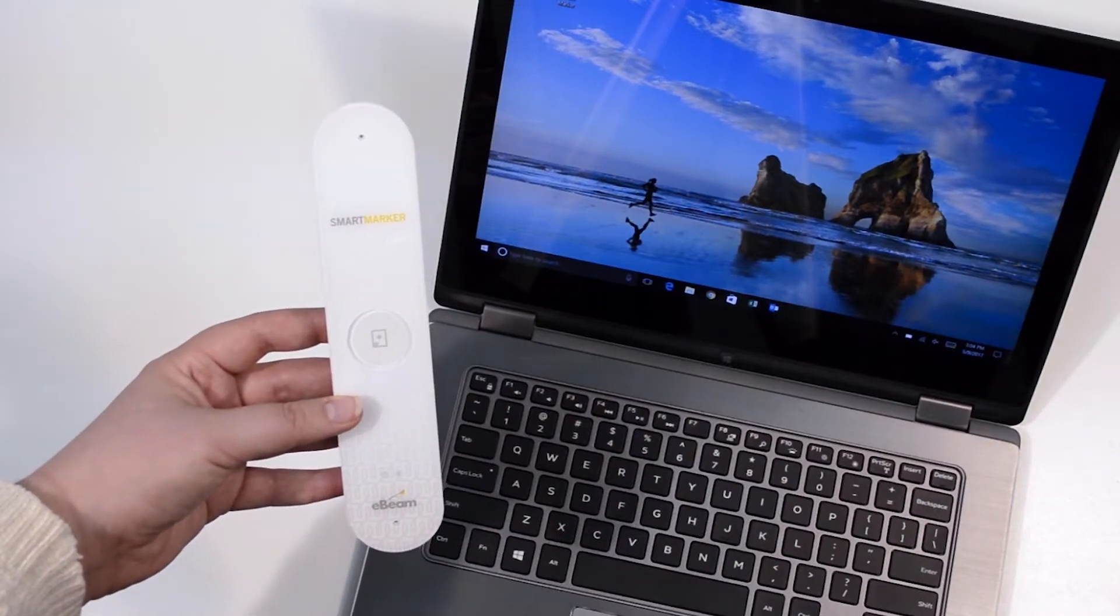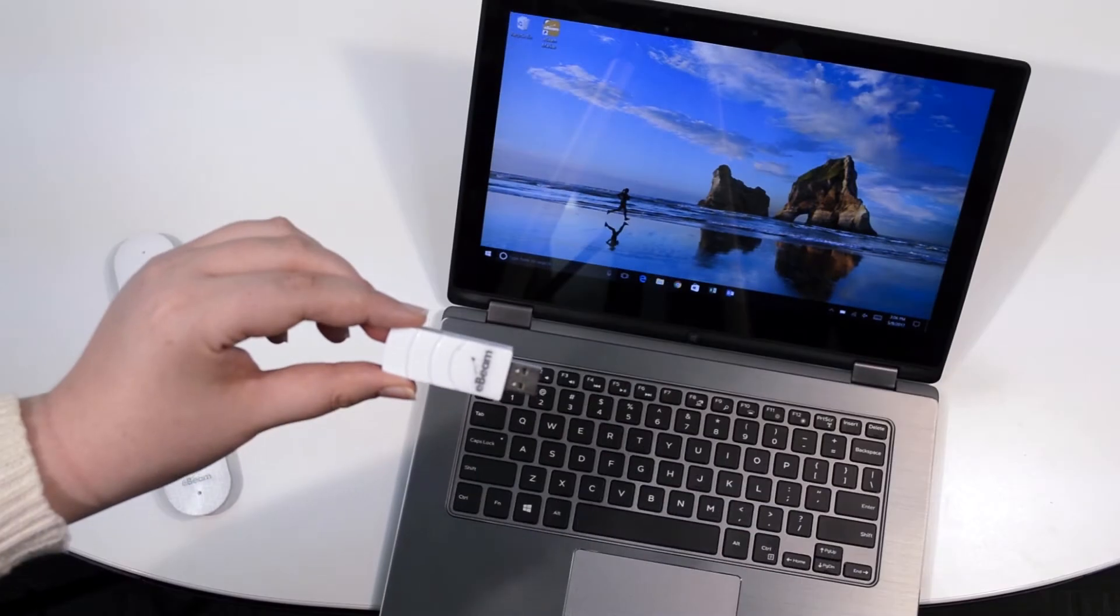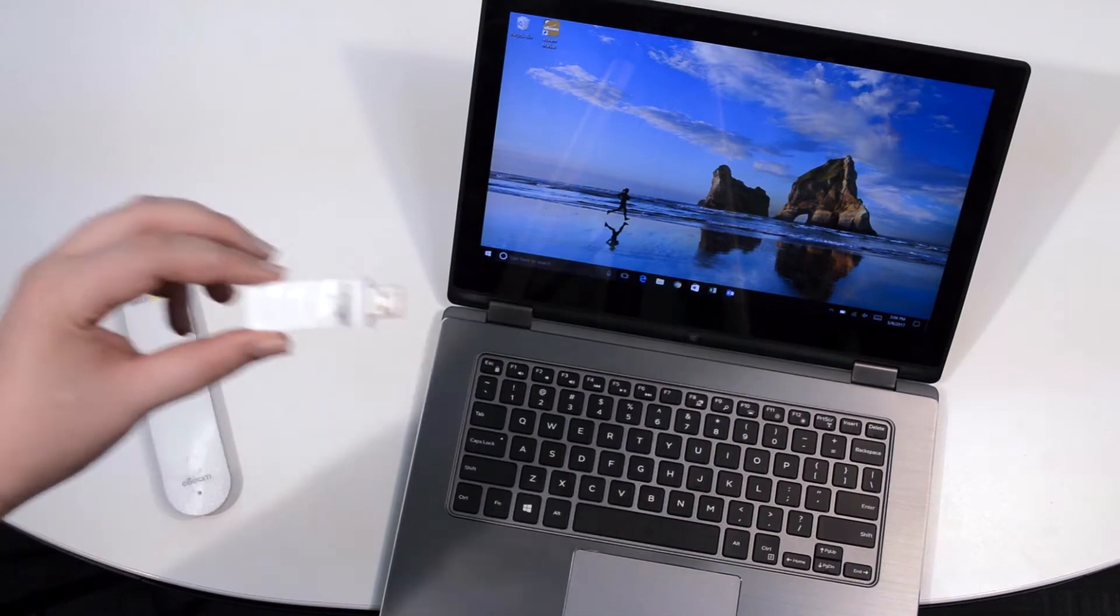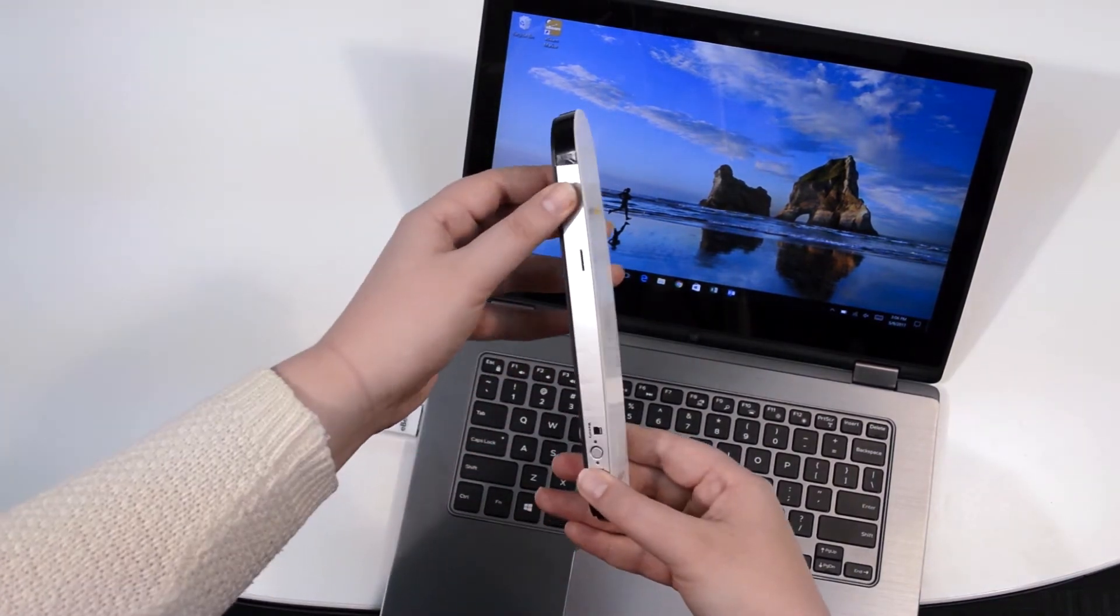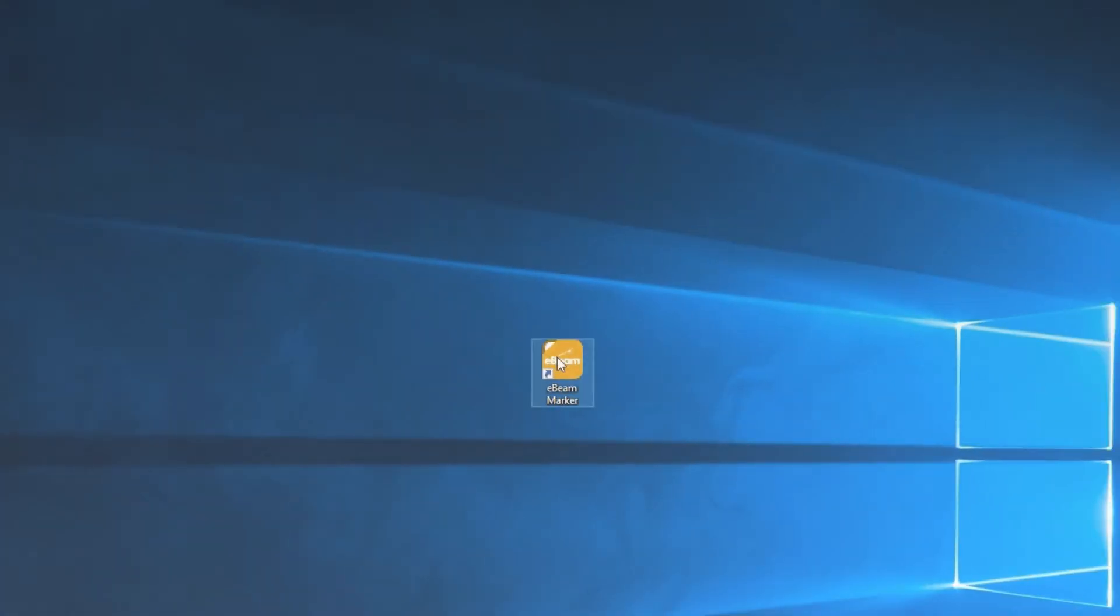If you are connecting using a Windows computer, you must use the USB wireless dongle. Plug that in first. Turn the sensor on and open the app. The sensor will automatically connect to the dongle so it's ready to capture.